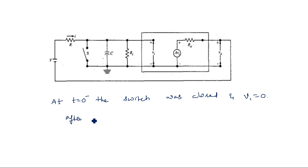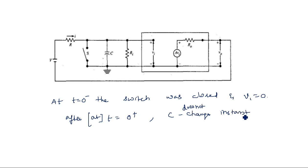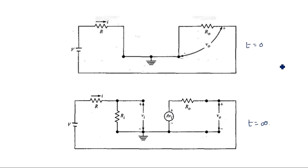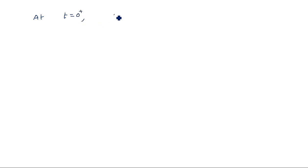Even if the switch is closed, the capacitor will not immediately charge or discharge. At t equal to 0 plus the capacitor does not change instantaneously, so vi is equal to 0 there also, and hence A times vi is equal to 0. The output voltage v0 at t equal to 0 plus is equal to minus v times R0 divided by R plus R0, and hence there is no jump in the output voltage at t equal to 0.